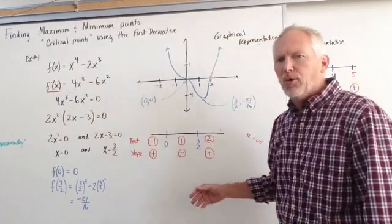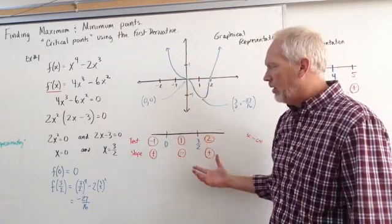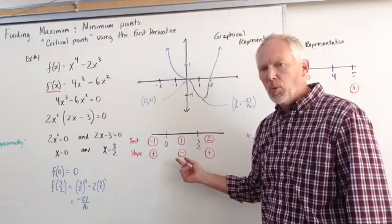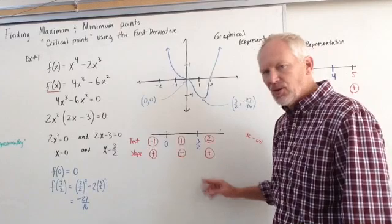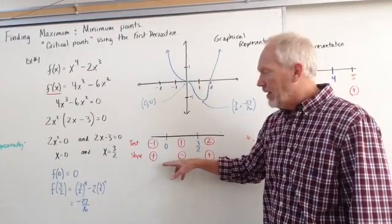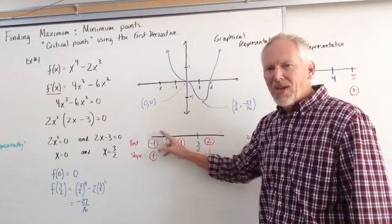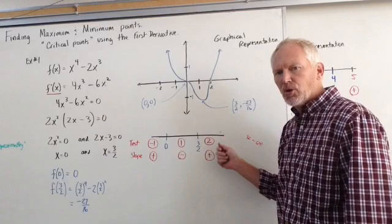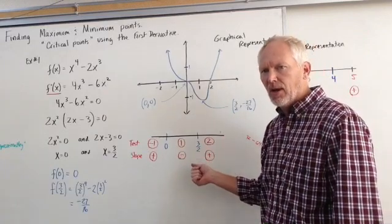What we can do is we can draw in a graphical representation. Here's what the graph looks like based on my test values and what the accompanying slope is. I know that at zero and at three halves, there is no slope. It's flat, a horizontal line. The tangent line would be horizontal. What I want to do is I want to test numbers before, in between, and after those critical values or those values where the horizontal line is, the tangent line is zero.